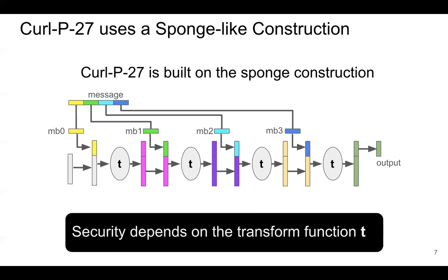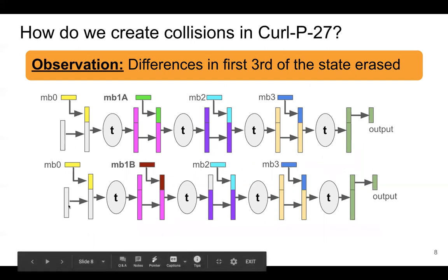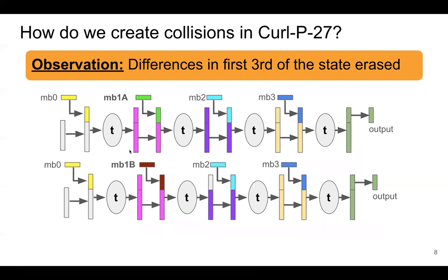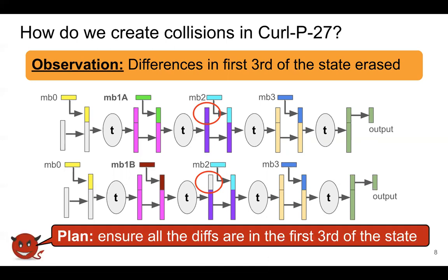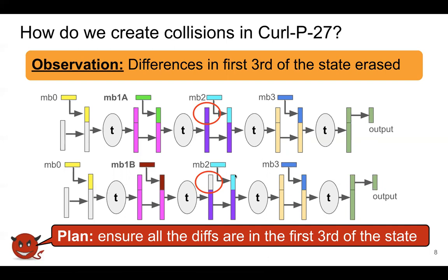The security depends on the transformation function — if it's bad, the security of the scheme is likely broken. This construction works differently from many other sponge constructions because when we take the message block and put it in the first third of the state, we don't XOR it in — this actually just overwrites the state. So if two messages have a different message block and after running the transformation all differences exist in the first third of the state, then when the next message block comes along, it will just overwrite those differences. Our plan is to get all differences into the first third of a state, then use the next message block to overwrite them and cause a collision.